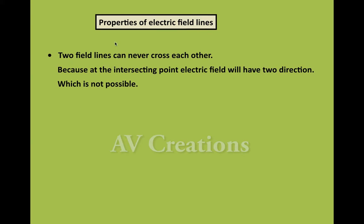A main property of electric field lines is that two field lines can never cross each other, because at the intersecting point the electric field would have two directions, which is not possible. If we consider two electric field lines intersecting at a point, there would be two directions, which is impossible.